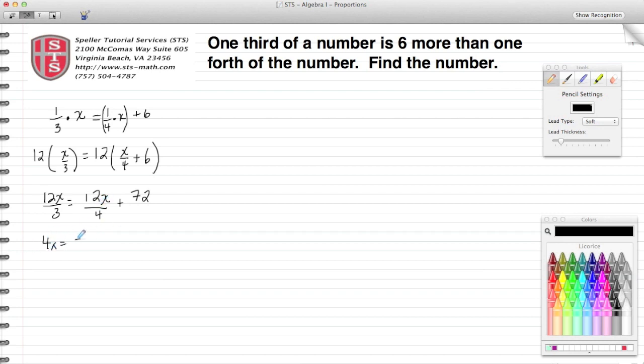I need to get my variables off to one side, so I'm going to subtract 3X from both sides. I see the 3X goes away over there. 4X minus 3X just leaves me X, and my 72 comes down, so I find that the value of the number is 72.